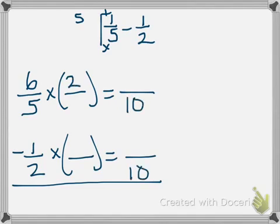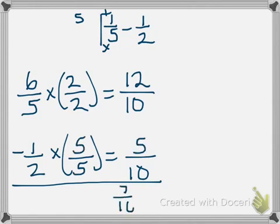So I need to come up with my common denominator, which would be 10. To get from 5 to 10, I multiply by 2. 6 times 2 is 12. To get from 2 to 10, I multiply by 5/5. Now this one's straightforward. 12 minus 5. I get 7/10 as an answer.